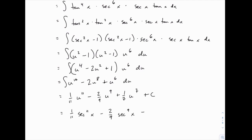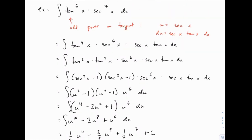The answer looks complicated, but the process was straightforward once you know what you're looking for. We're essentially doing u-substitution, with the added step of using trig identities to make the substitution workable. By recognizing the overall pattern early on, we can select the right u and du from the start, saving time and effort.